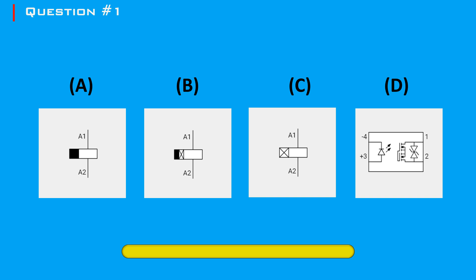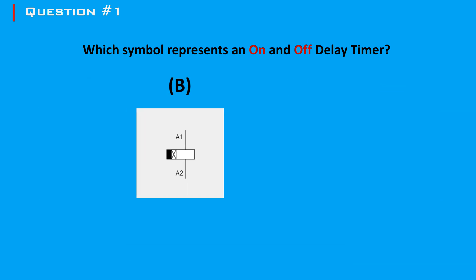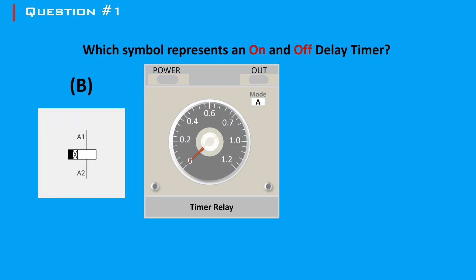Question 1: Which symbol represents an on and off delay timer? The answer is B. It is a dual-mode versatile device that can operate as both an on-delay timer and an off-delay timer. A dual-mode timer typically has a selector switch or programming option to choose between the on-delay and off-delay modes, allowing the user to configure the timer based on the specific requirements of the application.